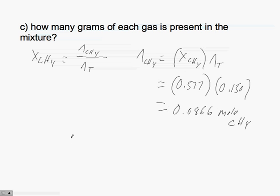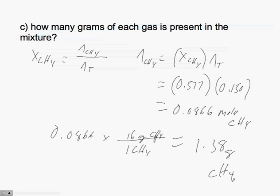We can take our moles of ethane and convert this into grams. For every 16 grams of C2H4, I have 1 mole of C2H4. This is equal to 1.38 grams of C2H4.